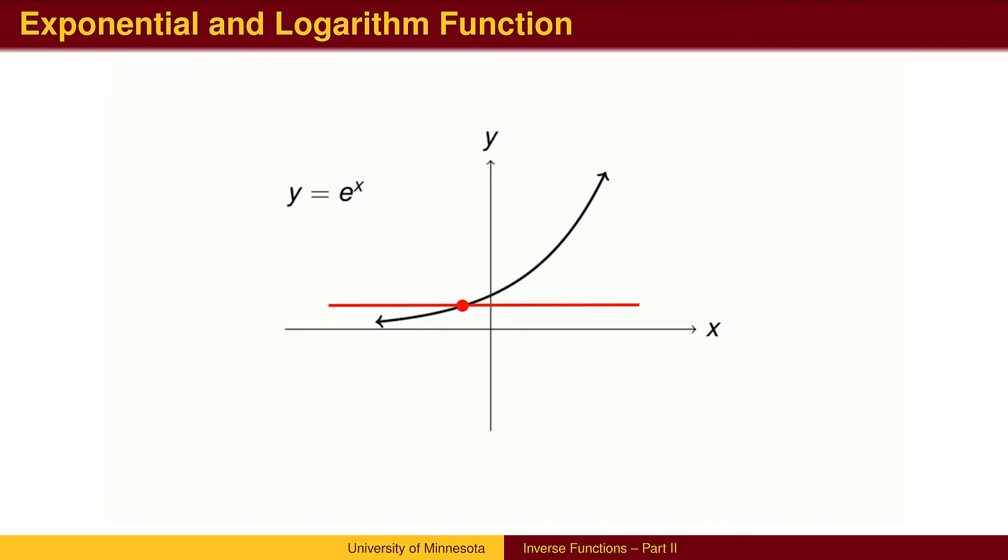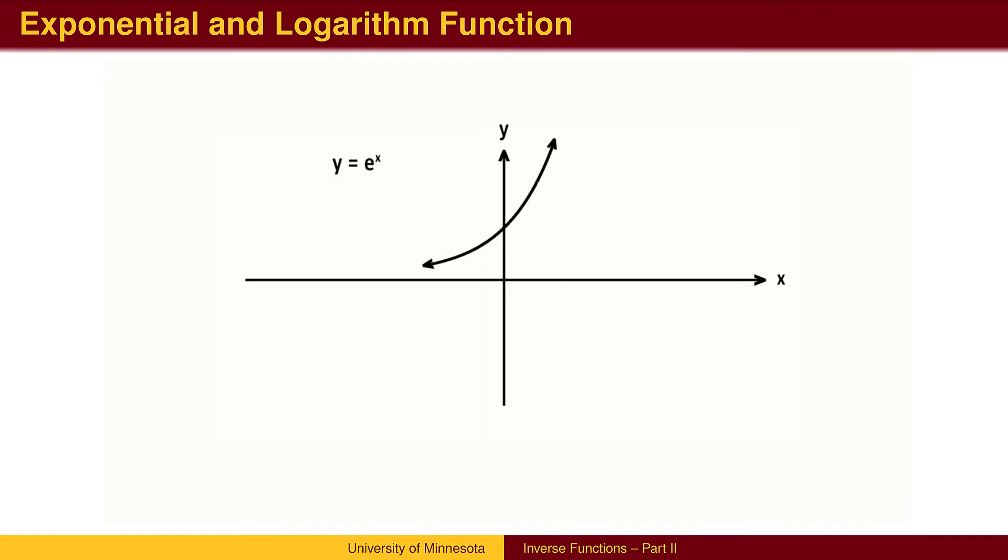It is one-to-one since each y value corresponds to only one x value. That is, it passes the horizontal line test. We can easily find the complete inverse function by interchanging x and y. The inverse function is called the logarithm function.